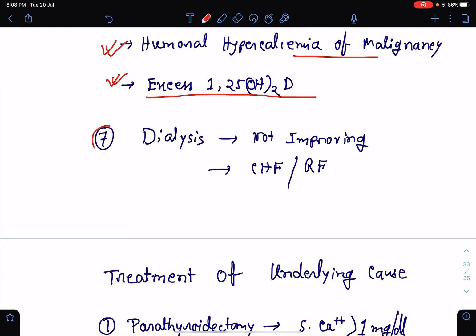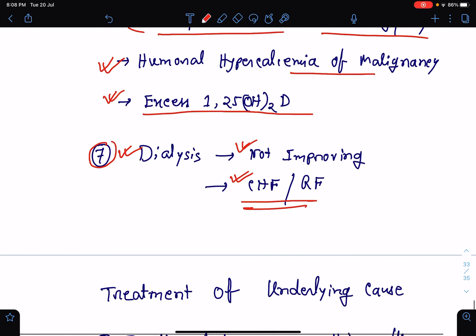Ultimately, the patient may require dialysis also. Very severe cases of hypercalcemia or if the patient is not improving and the patient is also having congestive heart failure or renal failure, the patient will require immediate dialysis.